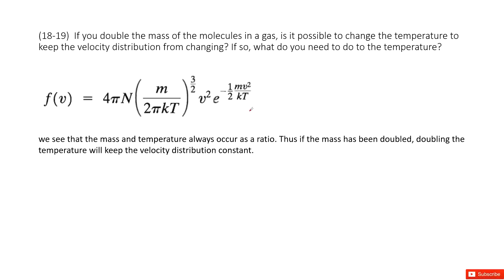Chapter 18 is about the kinetic energy of the gas. So there we have the velocity distribution of the gas molecules. And the question asks you: if you double the mass of the molecules, is it possible to keep the temperature constant and just change the temperature?